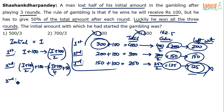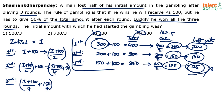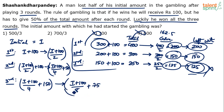After round 3: he has (i + 100)/4 + 50, wins 100 more, so the combined constant becomes plus 150. He is left with half of this total: (i + 100)/8 + 75. This is what he is finally left with after three rounds.